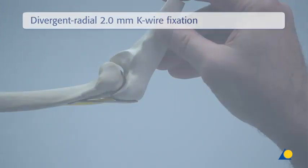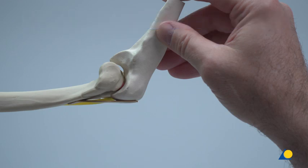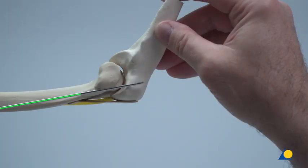The divergent radial technique using 2.0 mm K-wires from the radial direction will now be demonstrated. In the clinical situation, a small incision or a direct puncture with the K-wire is made over the planned entry point. 2.0 mm K-wires provide increased stability and this technique allows them a high level of insertion precision. K-wire insertion is planned in a centered alignment in the lateral view of the axis of the humerus shaft.